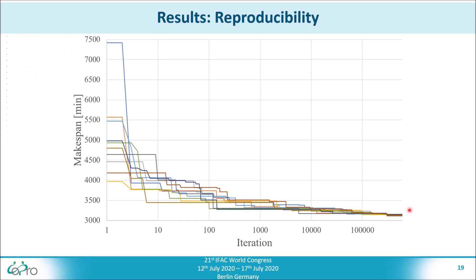This means that our results are reproducible. Also note that in this graph, the x-axis is displayed on a logarithmic scale. This shows that the algorithm reaches quite good solutions even after a few iterations compared to the total runtime of the algorithm.